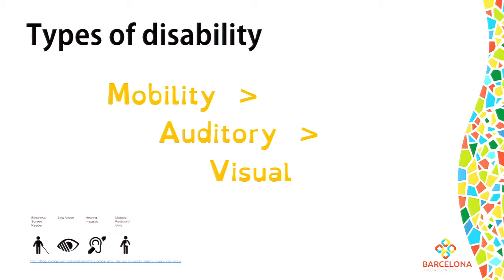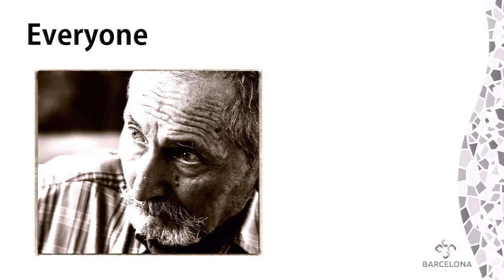Even more people suffer from cognitive disabilities. Just thinking about reading difficulties, we have numbers up to 20 percent of people with reading difficulties including dyslexia, and another 20 to 30 percent have limited literacy skills. This doesn't even include various types of cognitive disabilities like dementia, which increases with age. For me, the most important argument in the whole accessibility story is: it is for everyone, because we all age.